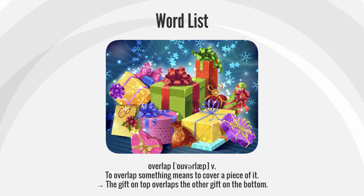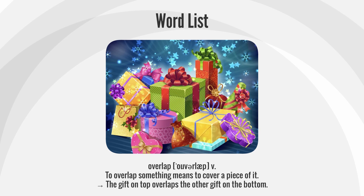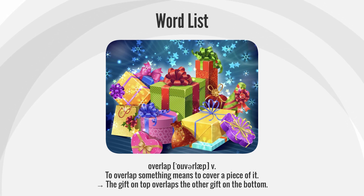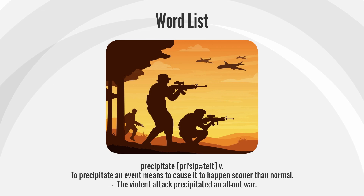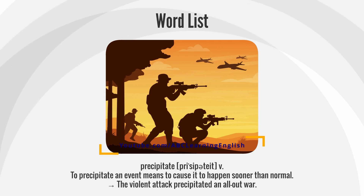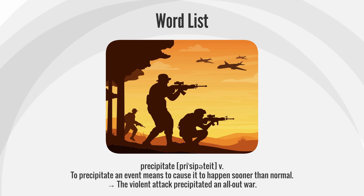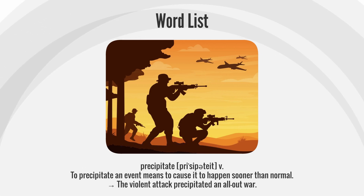Overlap — to overlap something means to cover a piece of it. The gift on top overlaps the other gift on the bottom. Precipitate — to precipitate an event means to cause it to happen sooner than normal. The violent attack precipitated an all-out war.